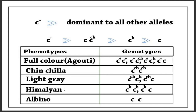The next phenotype is Himalayan. It is a homozygous combination of the Himalayan allele, or it may be a heterozygous combination of the Himalayan allele with the albino allele. The last case is albino, which is present in the homozygous condition — both alleles must be the albino allele.